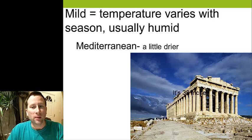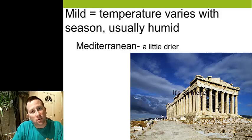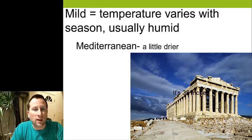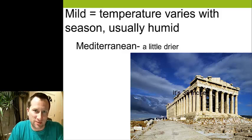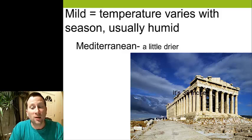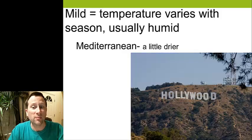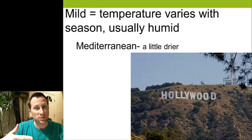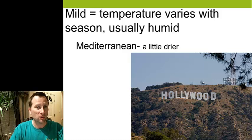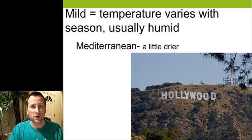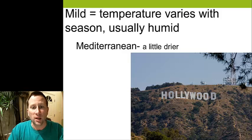Our next mild climate is Mediterranean. Mediterranean climate is a little drier than the last one. The best example we have in the United States is pretty much from about 50 miles south of San Francisco all the way down to San Diego — the entire west coast: Los Angeles, San Diego, and all those areas. That would be a Mediterranean climate.